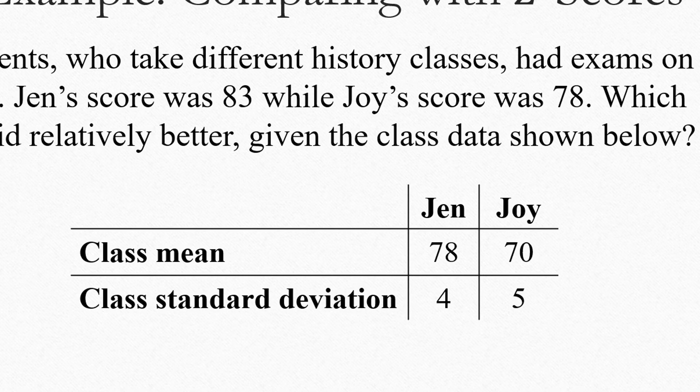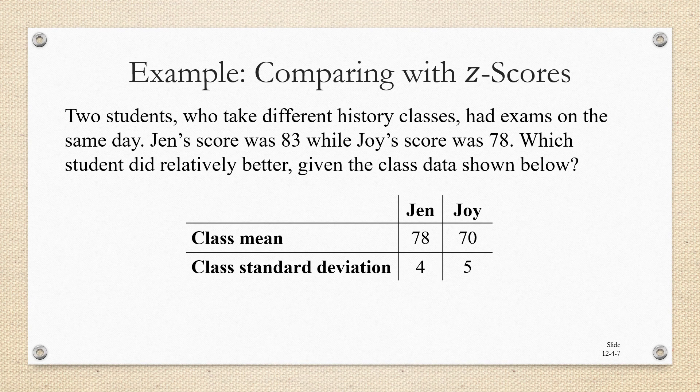Now you probably know from experience that just because you got a score of 83 and your friend got a score of 78, if you're in two different classes, that doesn't necessarily mean that you did a better job, because it might be that your test was easier. But standard deviations can help us to get a better idea of how to compare apples to oranges.